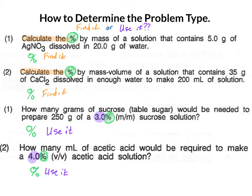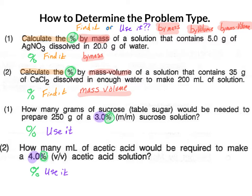The final step before calculations is to decide which type of percent we have: a percent by mass, a percent by volume, or a percent by mass volume. For question one, it says calculate the percent by mass — that's a by mass problem. Question two says percent by mass volume. Question three says 3% M over M, which is by mass. Question four asks for a 4% V/V, which is a by volume calculation.